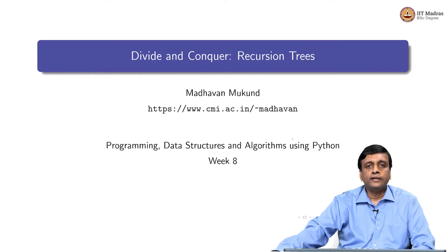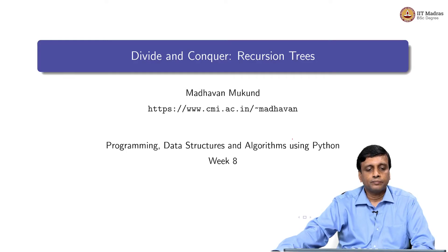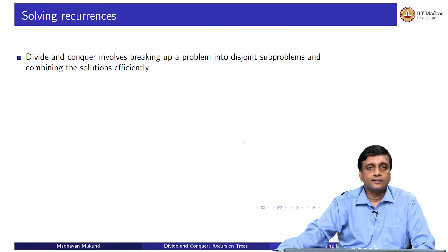We have seen three concrete examples of divide and conquer algorithms: the problem of counting inversions, the problem of finding the closest pair of points, and integer multiplication, which was Karatsuba's algorithm. Let us look at a more general property of how to analyze these divide and conquer problems.